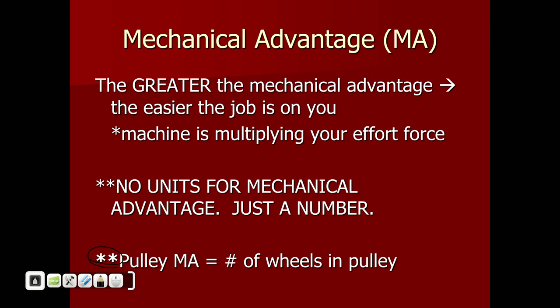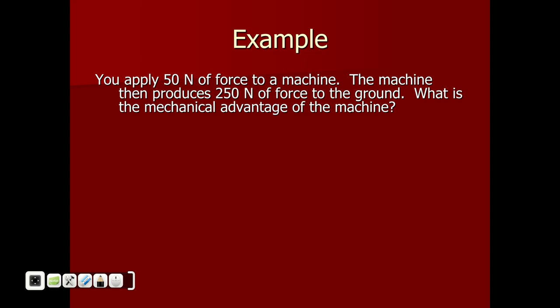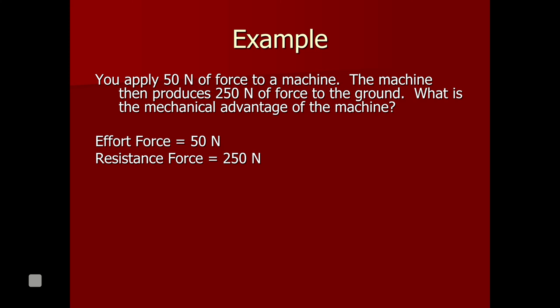For a pulley, the mechanical advantage is simply the number of wheels in the pulley — no calculation needed; just count the circles. For an example: you apply 50 newtons of force to a machine, and the machine produces 250 newtons of force. The effort force is 50 N and the resistance force is 250 N. MA equals resistance force divided by effort force: 250 divided by 50 equals 5. This machine has a mechanical advantage of 5, meaning it multiplies what you put in by 5.